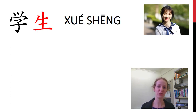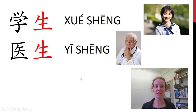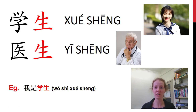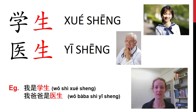第一个, 这是什么? 学生, student. This also has the character 生, which actually means life or living. 这是医生, a doctor. For example, you can say 我是学生 — I am a student. 我爸爸是医生 — my father is a doctor. You try.